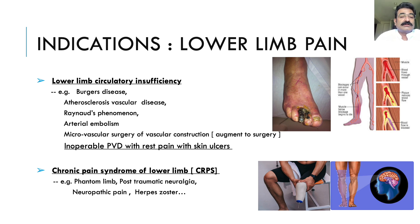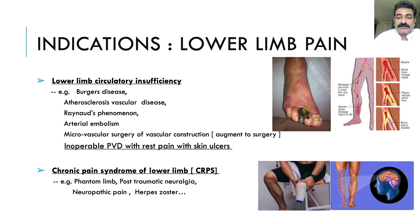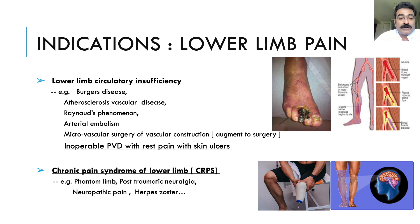The two important indications of this procedure are: first, lower limb circulatory insufficiency due to conditions like Buerger's disease, atherosclerosis, Raynaud's phenomenon, arterial embolism, and to augment microvascular surgery of the lower limb. A surgeon cannot address every blockage, so this procedure increases collateral cutaneous circulation. The most popular indication is inoperable peripheral vascular disease of the lower limb with rest pain and skin ulcers. The second important indication is neuropathic pain of the lower limb — chronic pain syndromes such as phantom limb pain, post-traumatic neuralgia, and hypersensitivity syndromes.